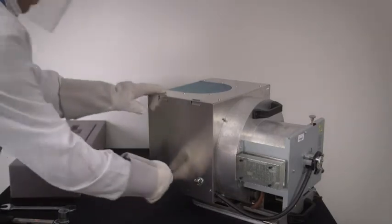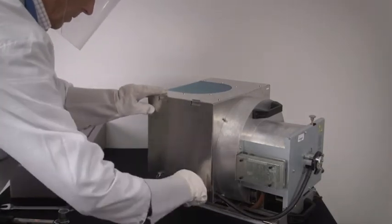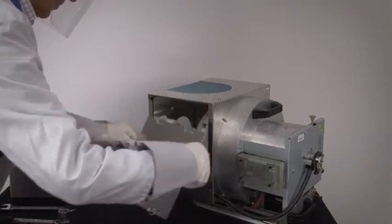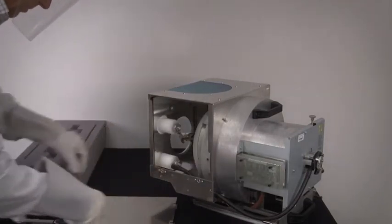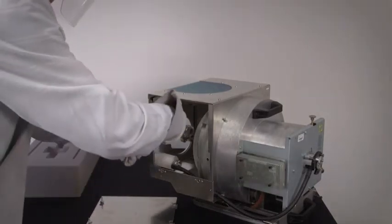Remove the side cover of the lamp house by loosening the retaining thumb screws and lifting the cover off of the lamp house. Next, disconnect the anode cable from the anode connector on the lamp house.